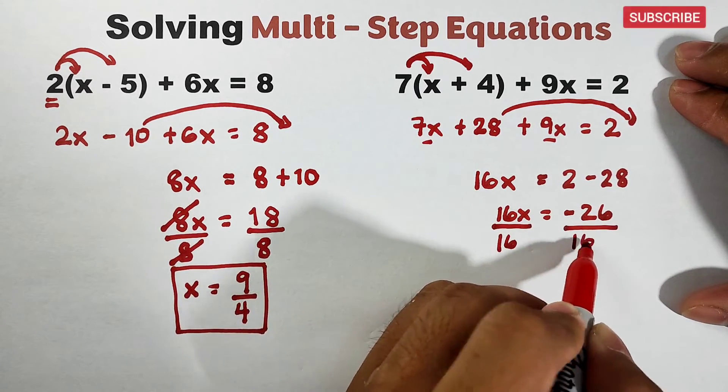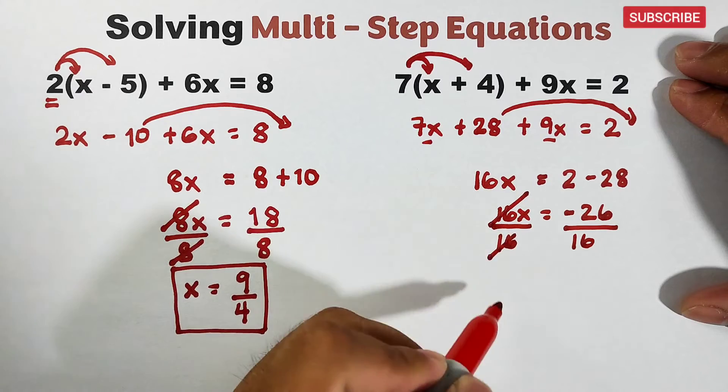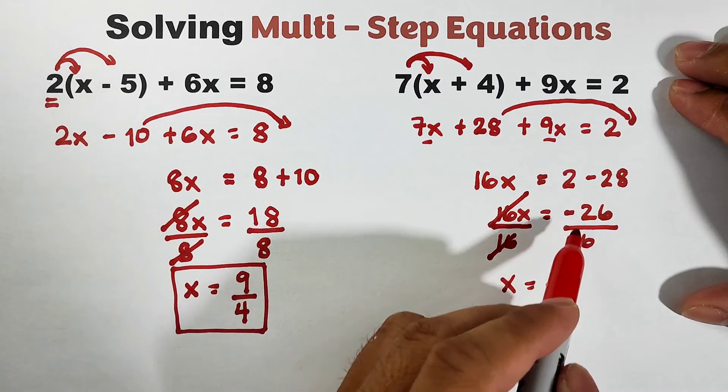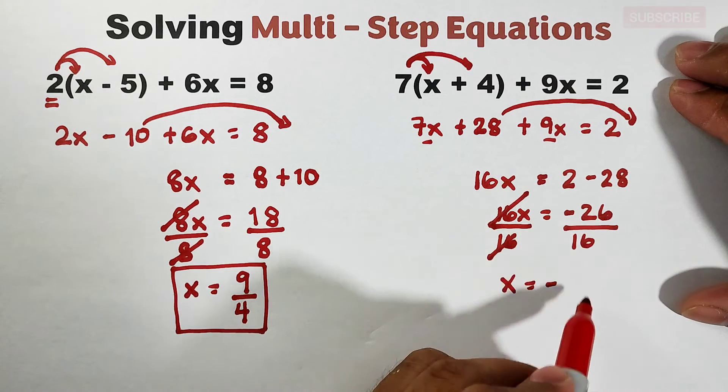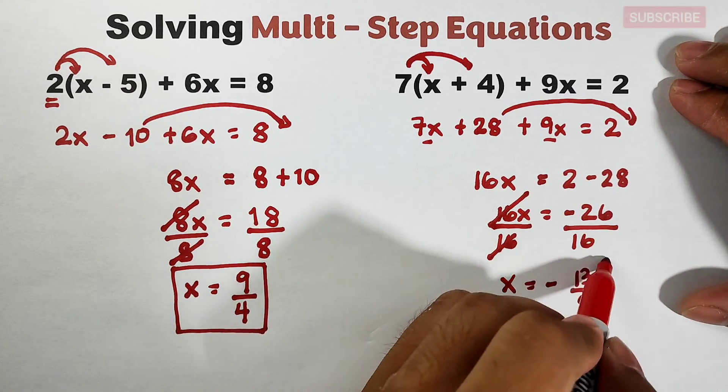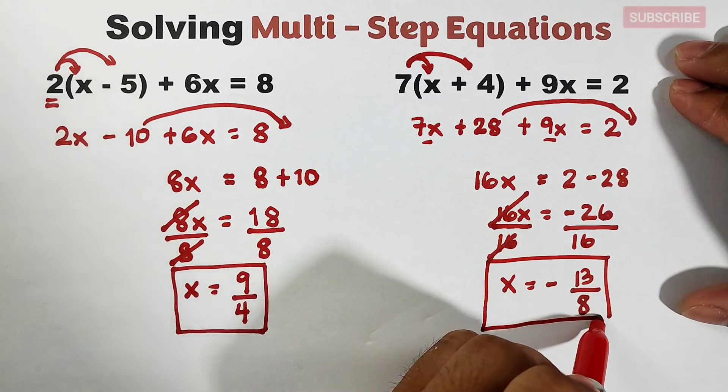Divide this one also by 16. Cancel, cancel. Your x is negative because one is negative and the other is positive. This is negative 13/8, and this is the value of x.